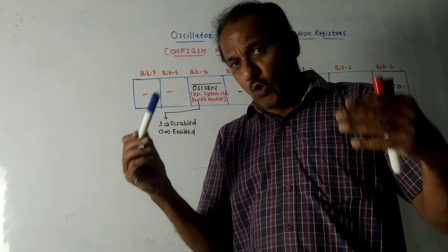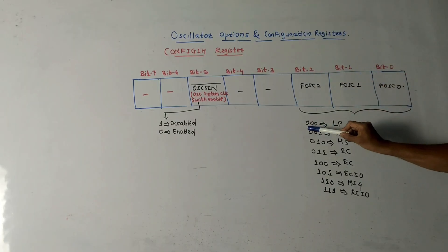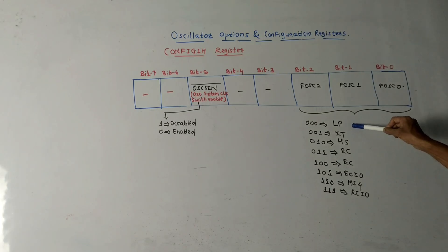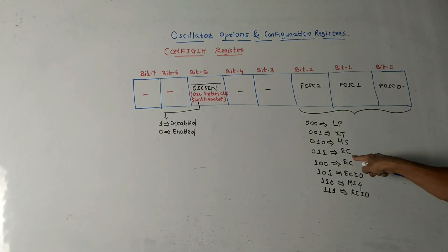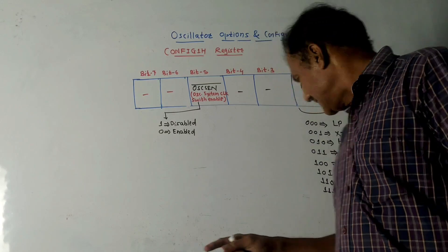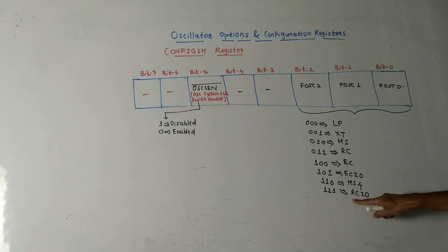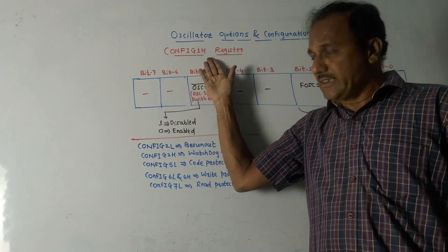Bit numbers 2, 1, and 0 of CONFIG1H are related to the selection of a particular oscillator option. The combinations are: 0-0-0 is LP mode (low power); 0-0-1 is XT (crystal or resonator connected as oscillator); 0-1-0 is HS (high speed oscillator); 0-1-1 is RC (external RC components); 1-0-0 is EC with I/O pins enabled; 1-0-1 enables I/O when input/output pins are active; 1-1-0 is HSPLL (high speed with clock frequency multiplied by 4); 1-1-1 is RCIO (external resistor/capacitor with I/O pins enabled).